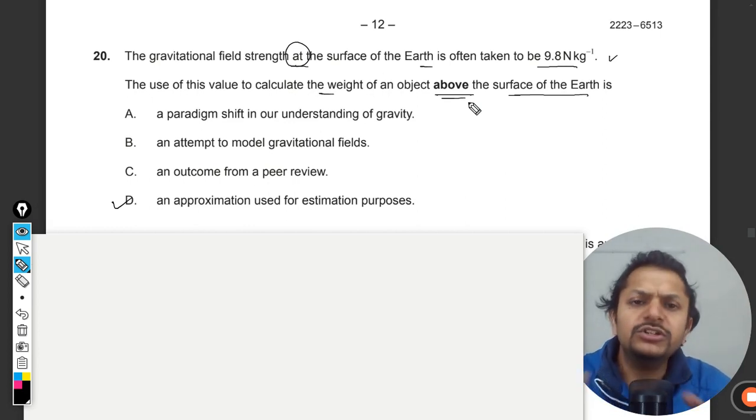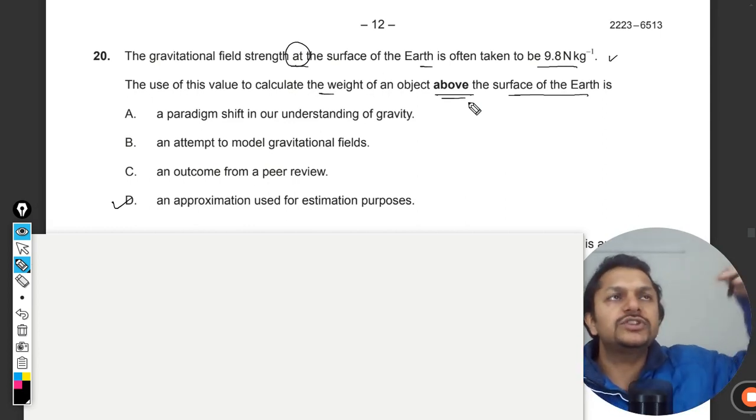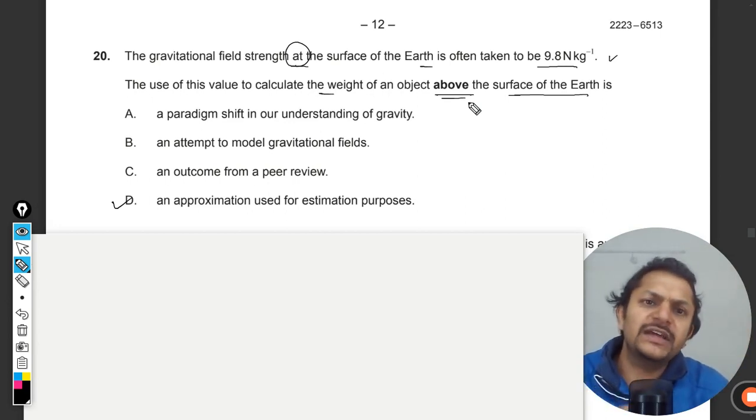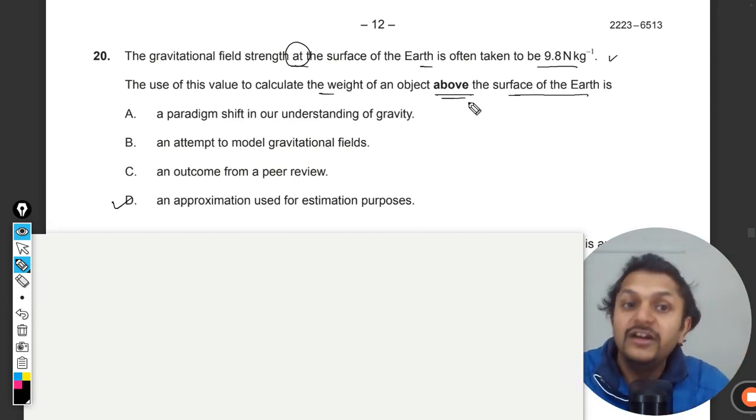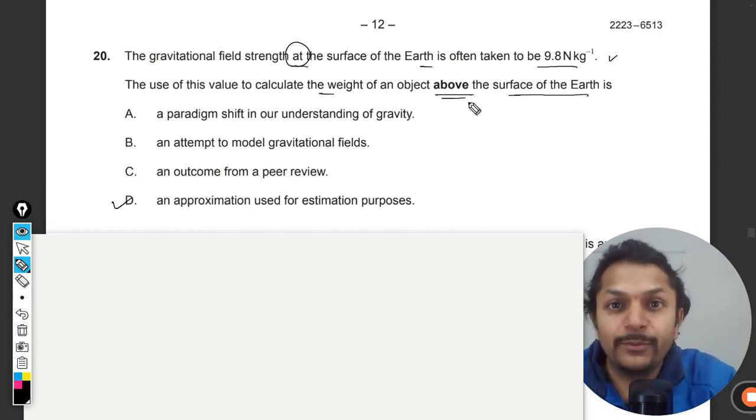Because technically speaking, the gravity is not 9.8 when you start increasing your height. Like for example you go to Mount Everest, so there will be some amount of gravity which will be lesser than this, but definitely it will not be that very different. It can be approximated to be 9.8 very easily.